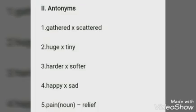Then leave one line and write Roman numeral II — Antonyms. First question: gathered — scattered. Second: huge — tiny. Third: harder — softer.